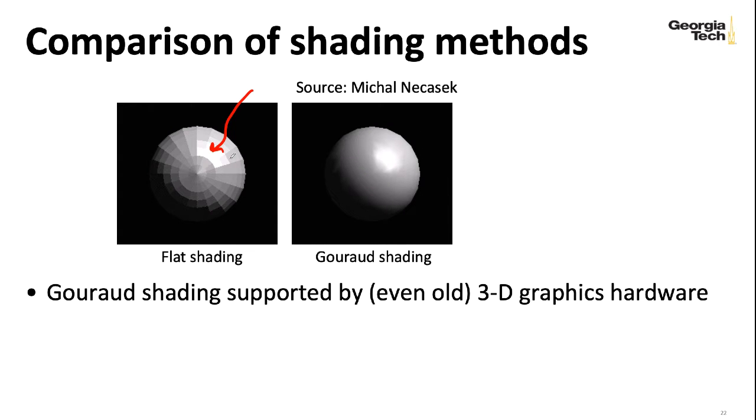The Gouraud shading definitely is an improvement, but here you can see that although things look smoothed out, you can still see sort of a little bit of the effect of the way this surface here is broken up into triangles. But again, this is fairly efficient from a computation point of view, because you're only doing those complicated lighting calculations for each vertex, and then you're just interpolating the resulting lighting values in between.